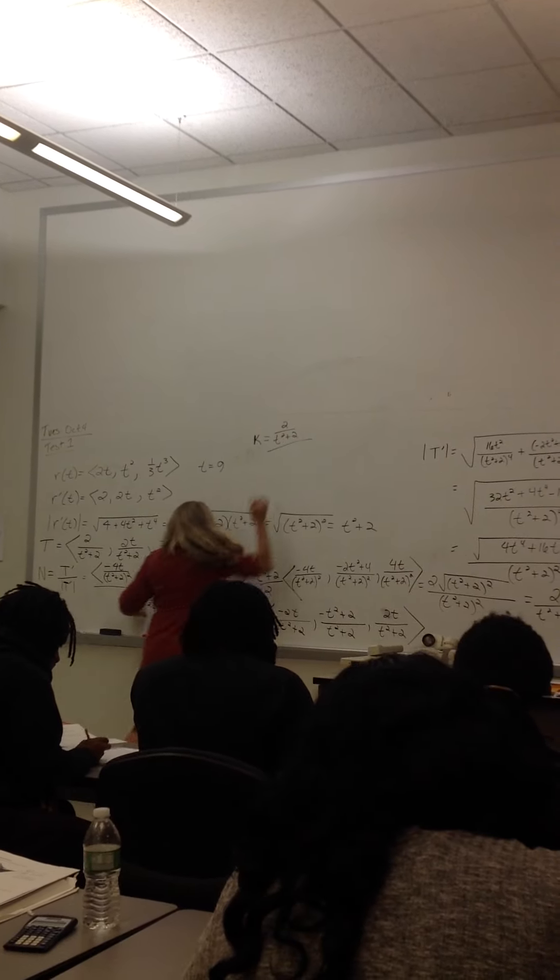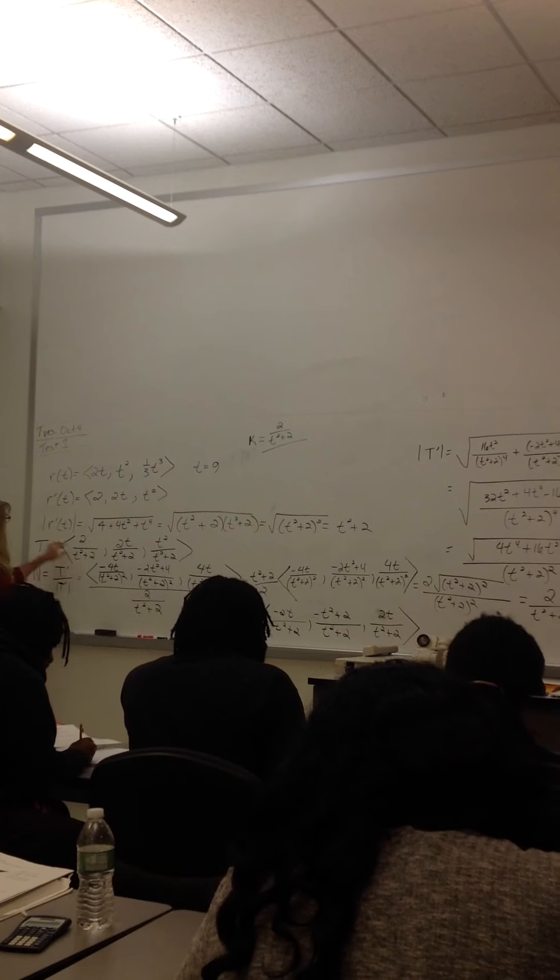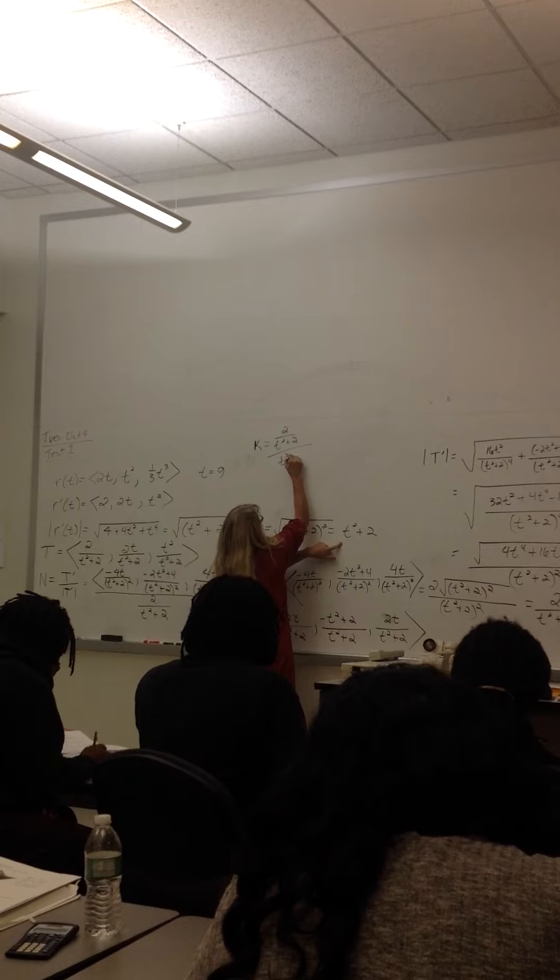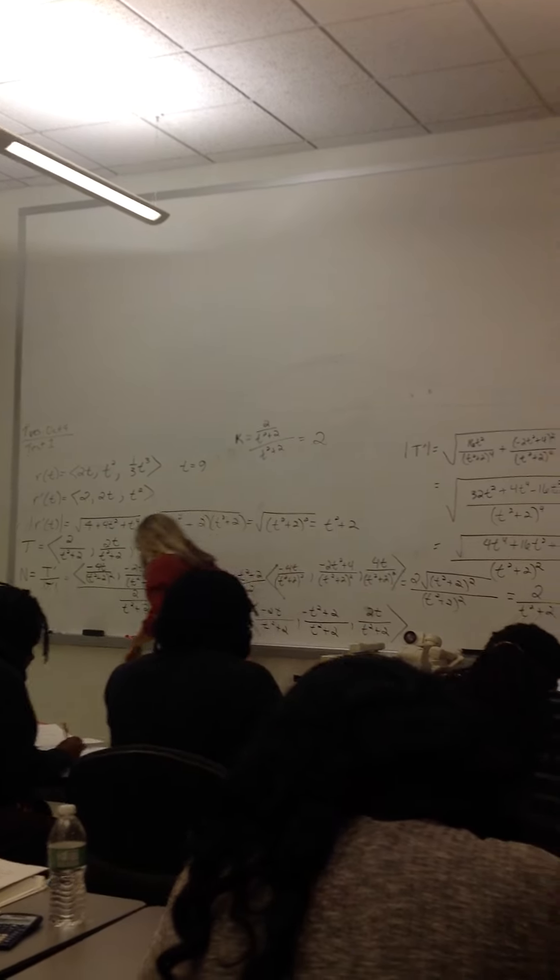That was the length of t prime. Then we're going to divide it by the length of r prime. It looks like we're going to get 2 as a constant.